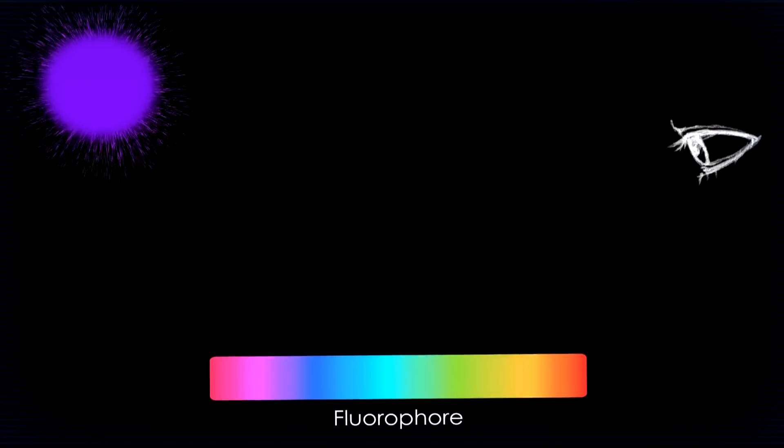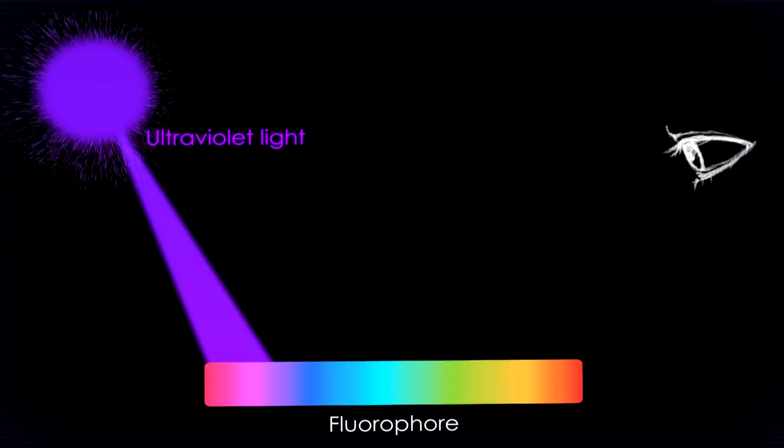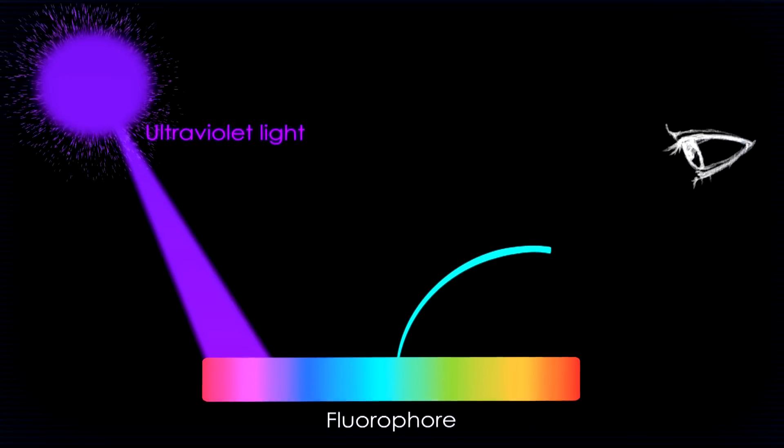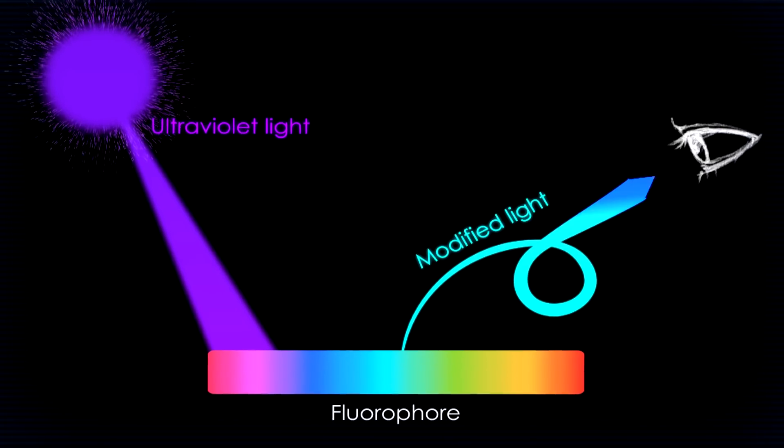The fluorophore absorbs the UV radiation that is not visible to the human eye and converts it into light that is visible, for example yellow or green.